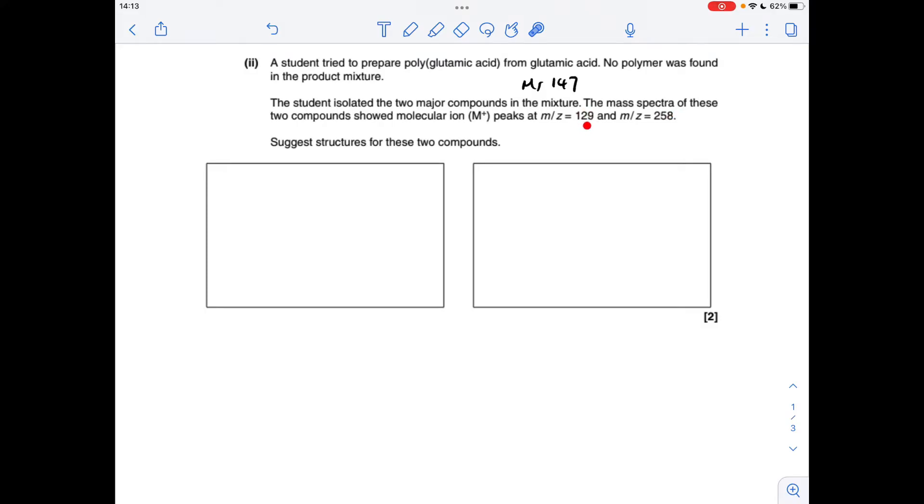We'll start with the lighter one. How do we get 129 from 147? We subtract 18, so we must have taken a glutamic acid molecule and lost a water molecule effectively. So there's my glutamic acid—I need to take a water molecule out. How is that possible? Well, this amino group here can interact with this carboxyl group at the other end of the molecule. If we take these atoms off and turn this into a ring, that's going to give us a substance with an MR of 129, which means it's going to look like that.